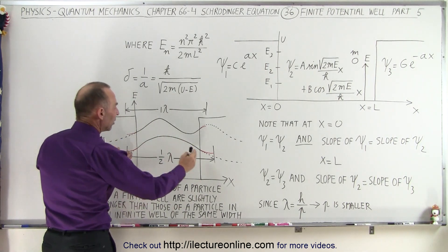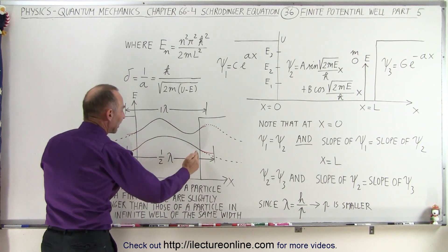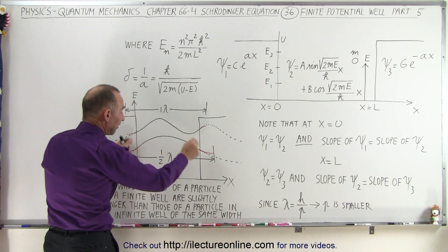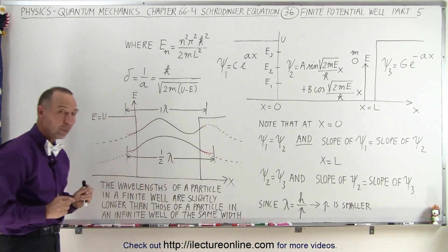In other words, for energy level 1, we know that the wavelength is such, or the motion of the particle is such, that the length of the well equals a half a wavelength, but actually, in a finite well, the half a wavelength is actually a little bit longer than the length of the well.